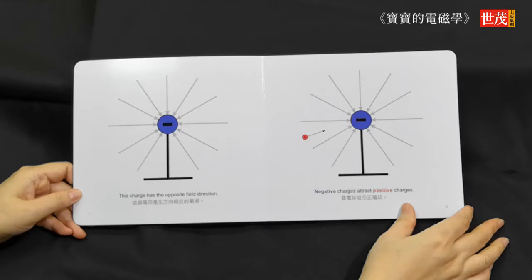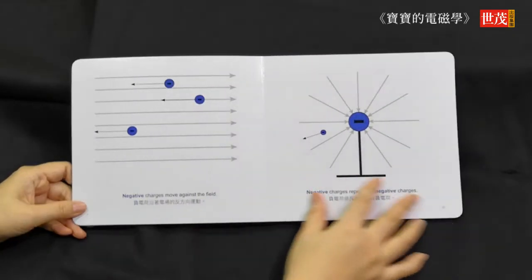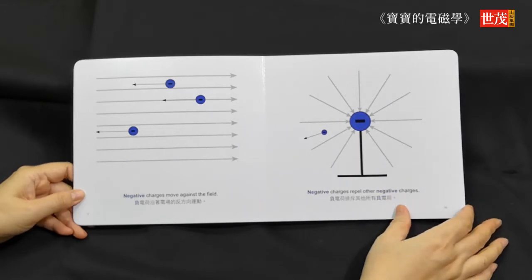Negative charges attract positive charges. Negative charges move against the field.